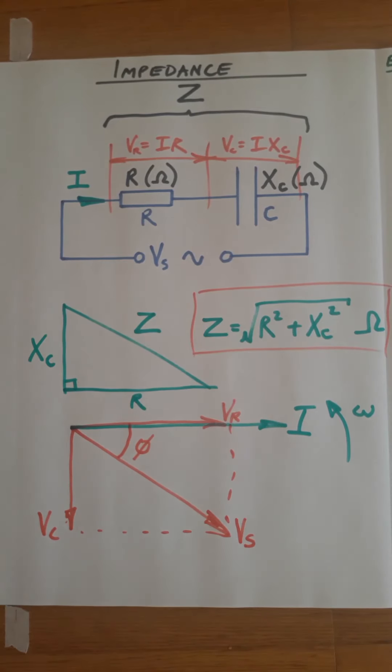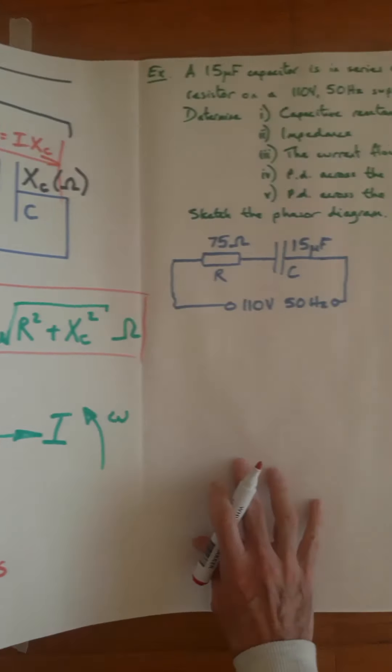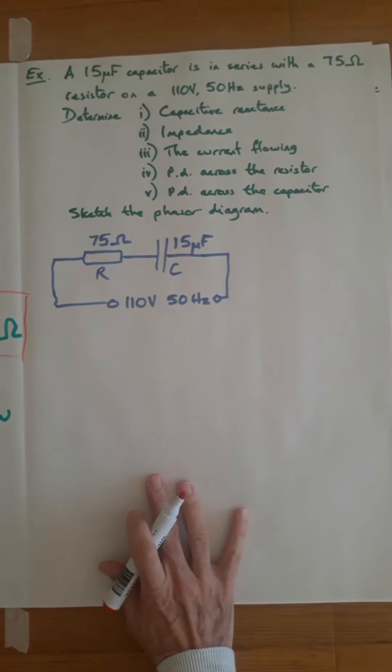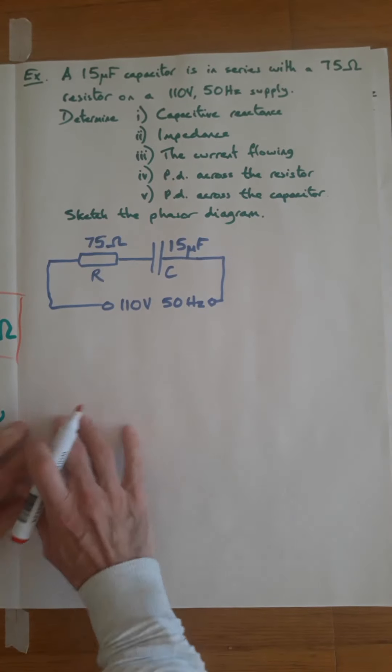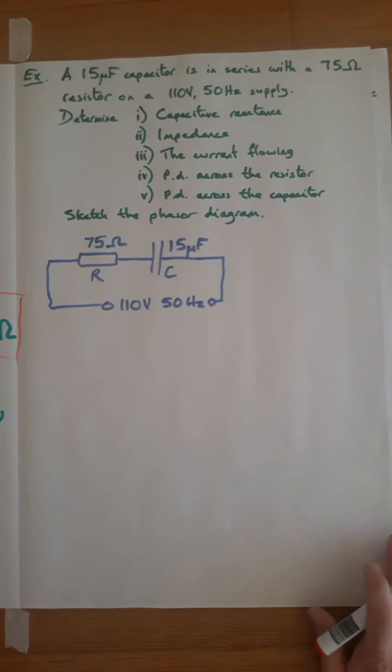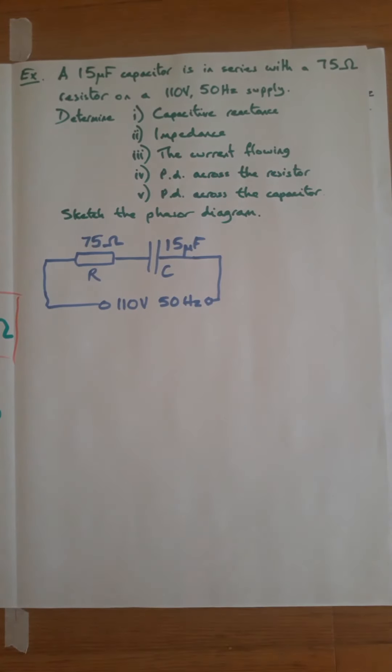Let's have a look at an example calculation. A 15 microfarad capacitor is in series with a 75 ohm resistor on a 110 volt, 50 Hertz supply.